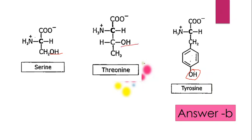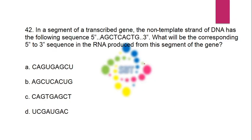All three amino acids — serine, threonine, and tyrosine — contain a hydroxyl (OH) group in their side chain. You can see from their structures that serine has an OH group, tyrosine has an OH group attached to the phenyl ring although it is an aromatic amino acid, and threonine also contains one OH group. Correct answer is option B.